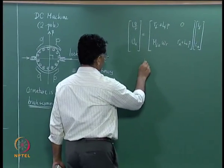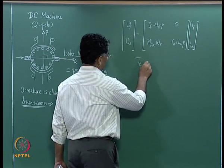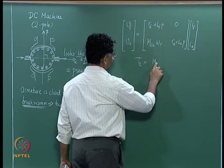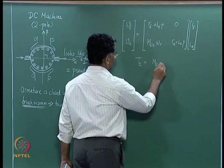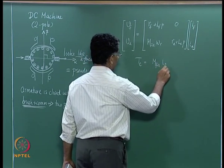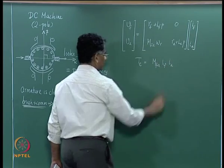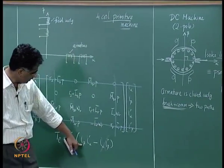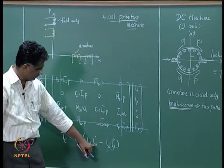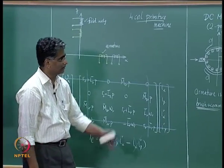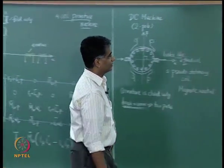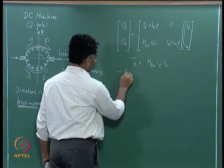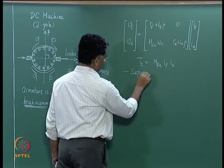The generated electromechanical torque is Te = Mfa · if · ia. This expression models a separately excited DC machine.